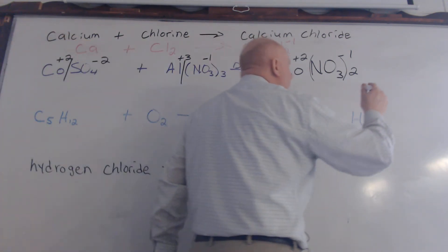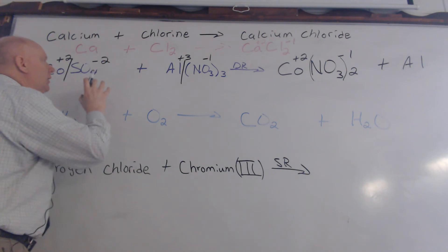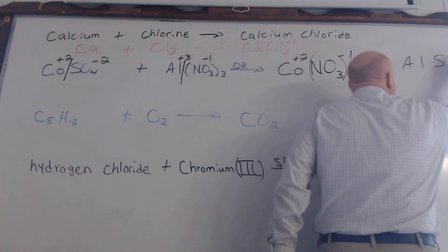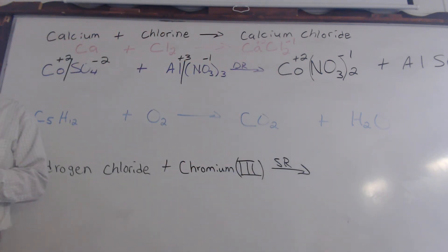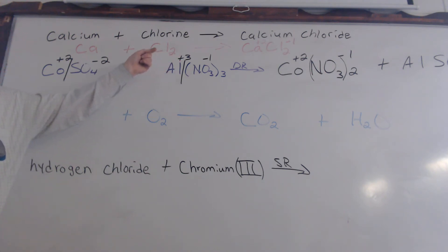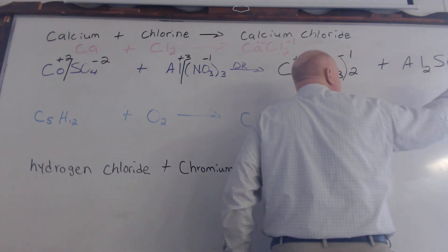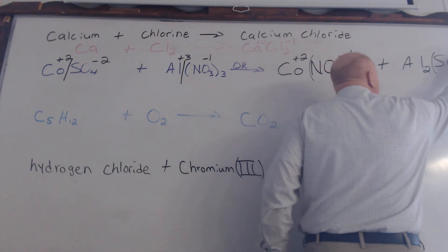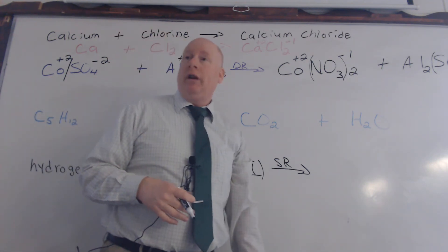So then we have leftover aluminum, which will bond to the sulfate from the other compound on that side. How do we write aluminum sulfate? The charges don't change, and the least common multiple between two and three is six. So we need two aluminums and three sulfates — and just like before, that needs to go in parentheses: Al₂(SO₄)₃. Now the last thing we need to do is balance it.